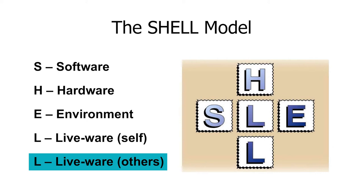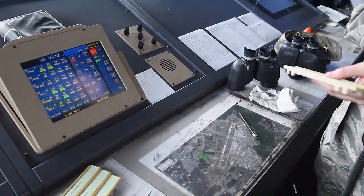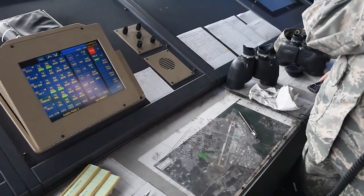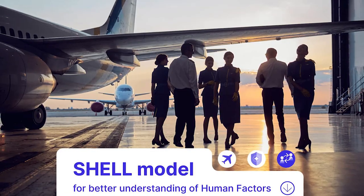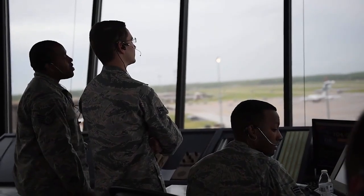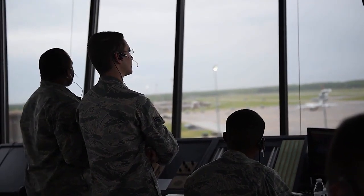And then there's liveware again, because humans also interact with other humans. Communication, teamwork, and leadership are the social networks of aviation. Things run smoothly if the communication lines are clear and the teamwork is solid. But if there's miscommunication or poor teamwork, it's pure chaos and confusion — a disaster just waiting to happen. Any change within the aviation SHELL system can have serious consequences, and we can use the model to reduce errors, enhance safety, and improve processes.